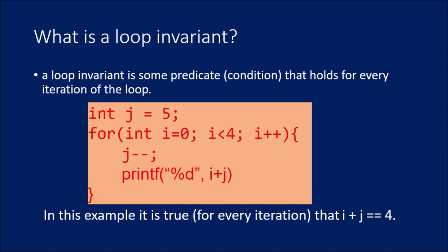If you look at this C code, you can see here int j equal to 5. Next, for int i equal to 0, we are declaring i and initialize i to 0, i less than 4, i++. And inside this loop, we are decrementing j by 1, then we are printing the value of i plus j.